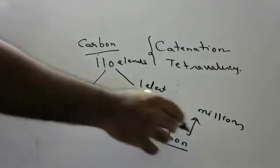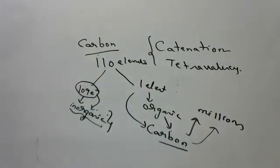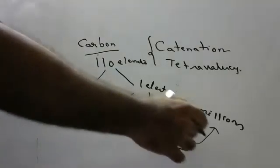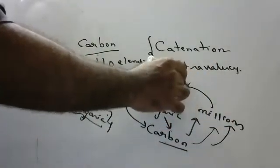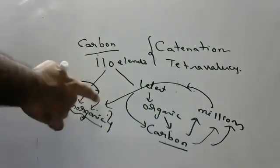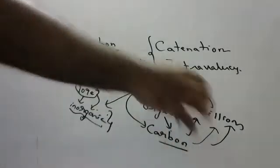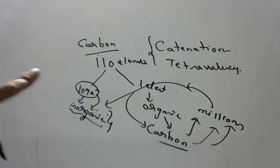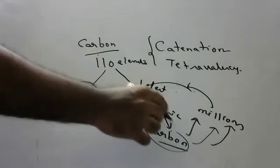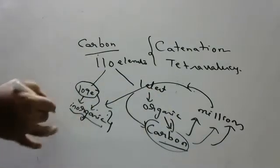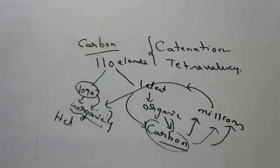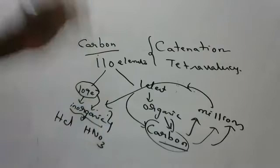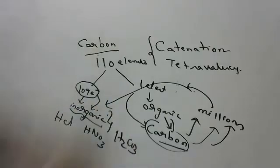Because of two special properties, carbon can form millions of compounds. When carbon forms so many compounds, we cannot study all of them under inorganic chemistry — it would become too difficult. So carbon is studied separately under organic chemistry. For inorganic acids, you simply remember the formula: HCl for hydrochloric acid, HNO3 for nitric acid, H2CO3 for carbonic acid — there's no other alternate.